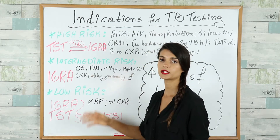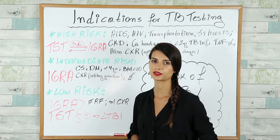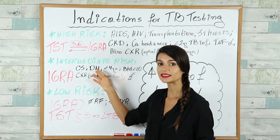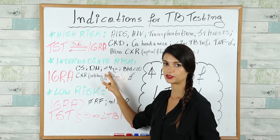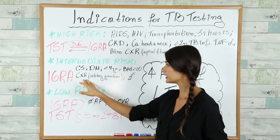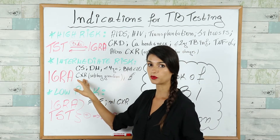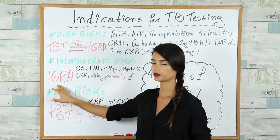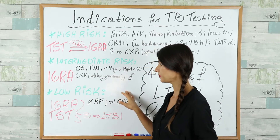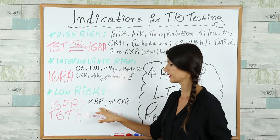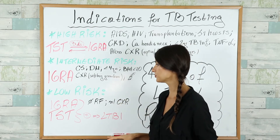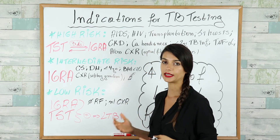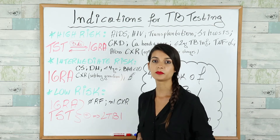Intermediate-risk patients include those on corticosteroid therapy, with diabetes mellitus (all types), TB infection less than four years of age, BMI less than 20, chest X-ray with a solitary granuloma, and devoted smokers of at least one pack per day. In these patients, IGRA is preferred. Low-risk patients have no risk factors and a normal chest X-ray; either test may be used, but both tests must be positive to confirm latent TB infection.